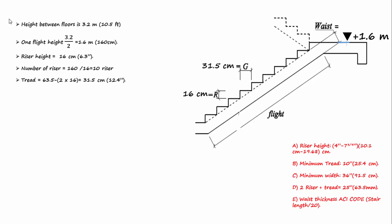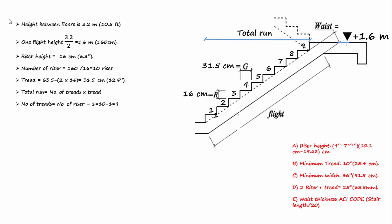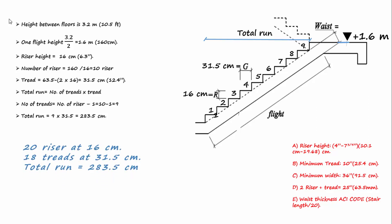We need now to find the total run of the stair. The total run equals number of treads × tread length. The number of treads equals number of risers minus one, which equals 9. So total run equals 9 × 31.5 cm = 283.5 cm. Our stair has 20 risers at 16 cm height and 18 treads at 31.5 cm length, and total run is 283.5 cm.